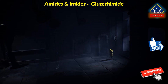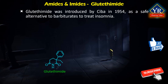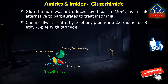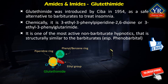Let's start with glutethimide, which is an example of amides and imides. Glutethimide is a sedative and hypnotic drug that was produced by Ciba in 1954 as a safe alternative to barbiturates to treat insomnia. It is chemically 3-ethyl-3-phenyl-piperidine-2,6-dione or 3-ethyl-3-phenyl-glutarimide. It is a member of piperidines and is one of the most active non-barbiturate hypnotics that is structurally similar to the barbiturates, especially phenobarbital.